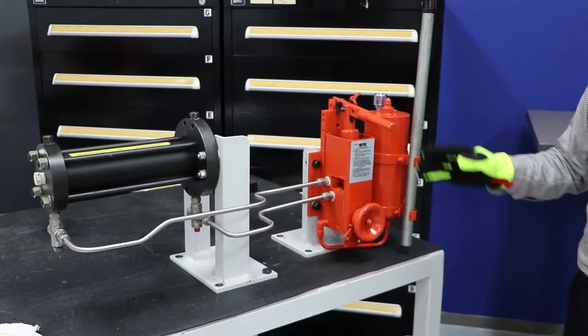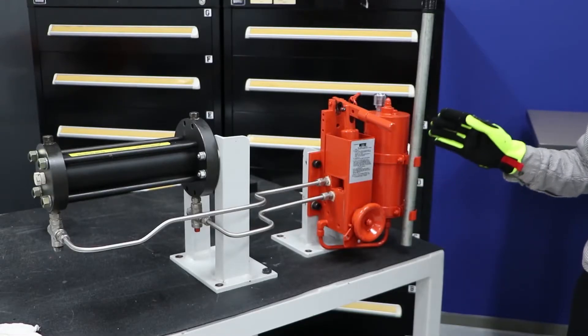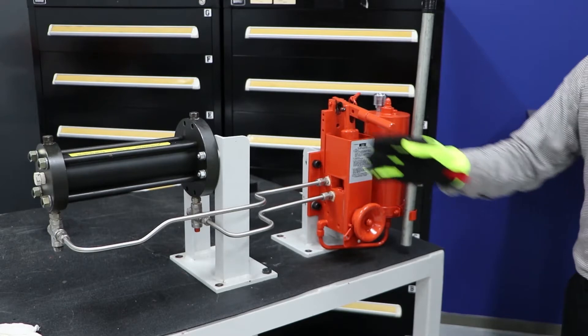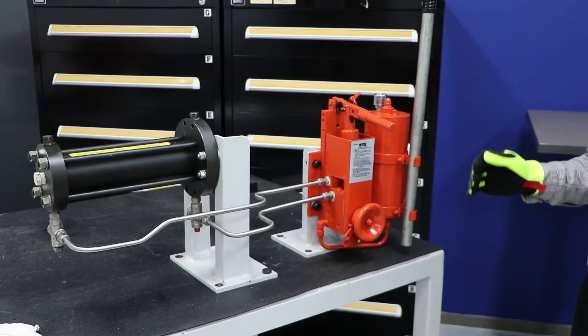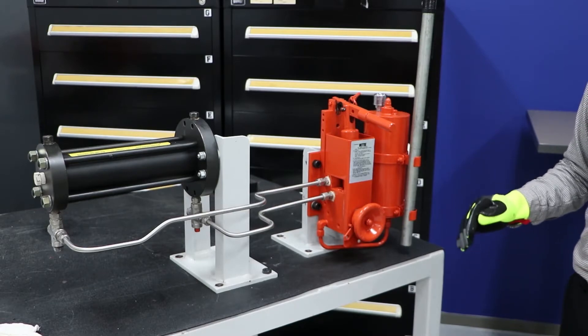Here I have the M18 hand pump and reservoir assembly, the hydraulic cylinder. Together, this is the M18 hydraulic override system for a double-acting G-Series actuator.